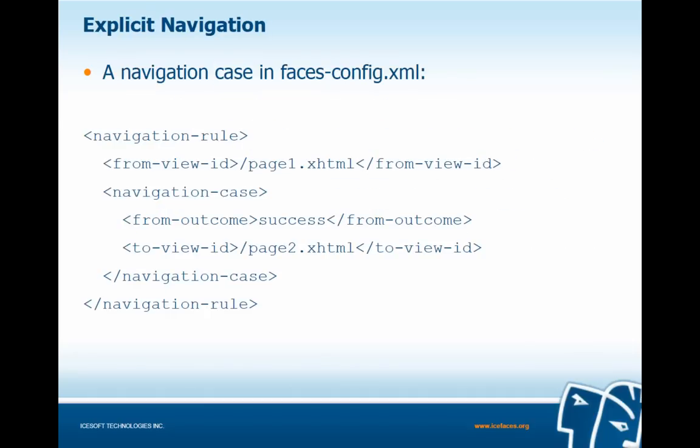Here is an example navigation case as defined in a faces-config file. We have our navigation rule elements, and within that we have our from-view-id, which is our current page — in this case it's page1.xhtml. Below that we have our navigation case: if the from-outcome, our logical outcome, is 'success', we're going to transition to the view ID page2.xhtml.